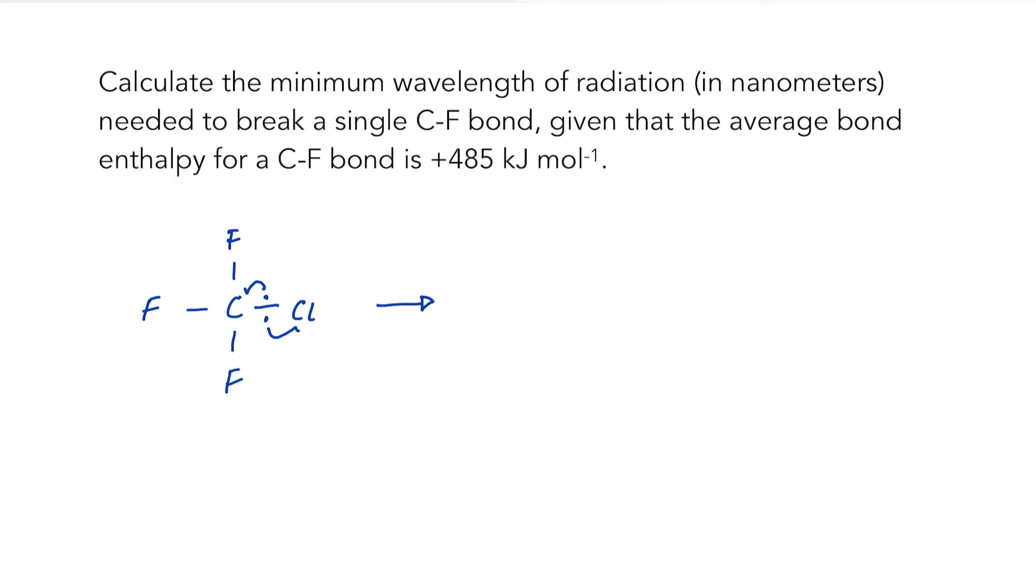CFCs are molecules that are chemically very stable, which is part of their problem because they aren't broken down in the troposphere. They rise up into the stratosphere where very high energy UV light causes bonds to break homolytically, which means that bonds break and radicals are formed because we end up with two species both of which have an unpaired electron. These radicals can go on to catalyze the destruction of ozone.